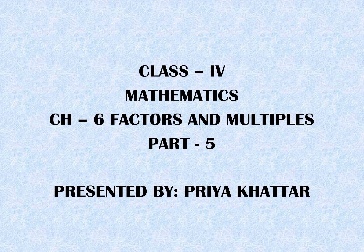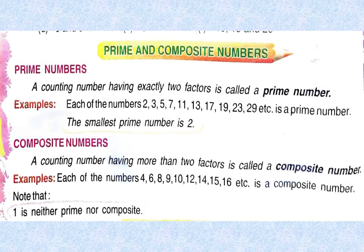This is part 5 of chapter 6, Factors and Multiples. I am going to describe prime numbers and composite numbers. A counting number having exactly two factors is called a prime number. For example, each of the numbers 2, 3, 5, 7, 11, 13, 17, 19, 23, 29, etc. is a prime number. The smallest prime number is 2, having exactly two factors — not more, not less.